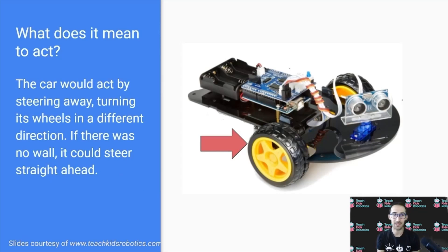The car would act by steering away, turning its wheels in a different direction electronically, and if there was no wall, it could continue steering straight ahead.